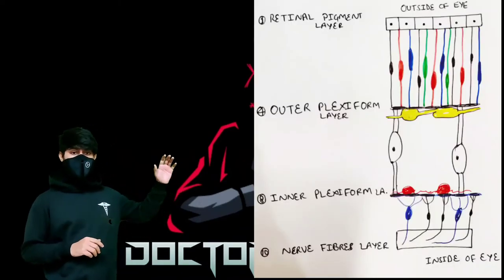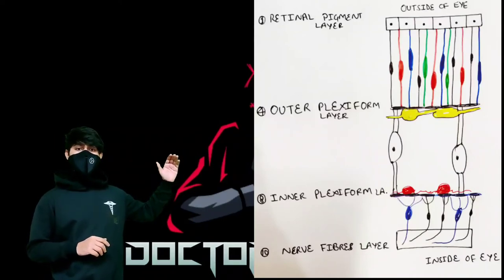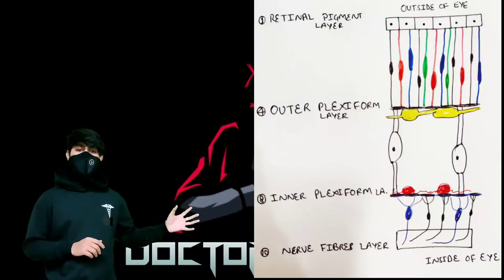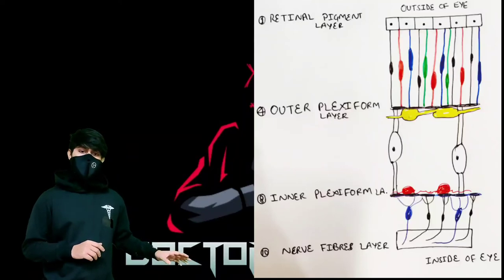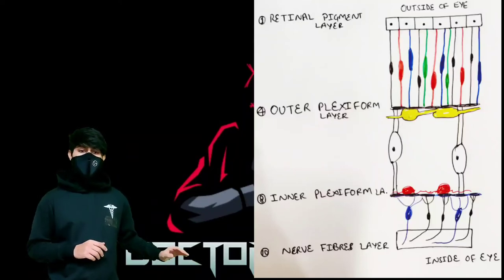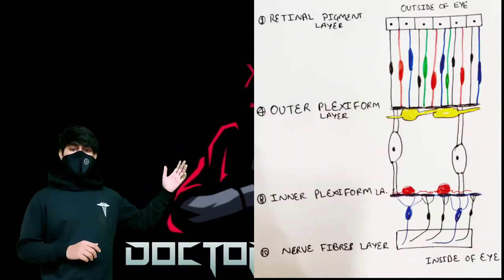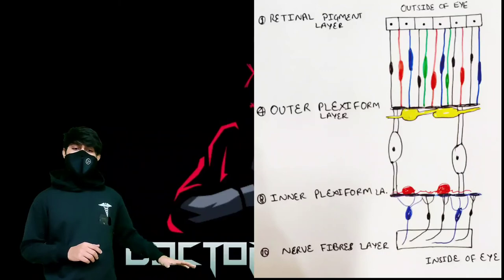There are a total of 10 layers. The first landmark is at the first layer, which is the retinal pigment epithelium layer. The second landmark is at the fourth layer, that is the outer plexiform layer. And the third landmark is at the eighth layer, that is the inner plexiform layer. So these are very easy to remember: pigment epithelium at the first layer, outer plexiform at the fourth layer, and inner plexiform at the eighth layer.